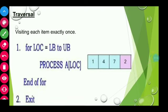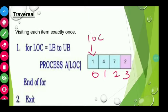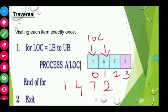Consider this array which has four elements with indices 0, 1, 2, and 3. Let us apply the algorithm on this array. Initially, loc will be pointing to the first element of the array. The first element is visited and some process is applied — say, printing the element. In the next iteration, loc will be incremented and will be pointing to the second element; 4 is visited and printed. Likewise, the loop repeats until all the elements are visited and printed.